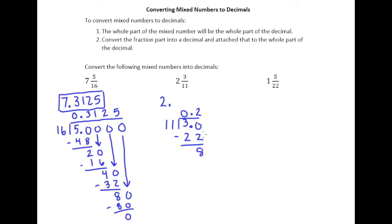2 times 11 is 22. Get a remainder of 8. Take our 0, drop it down. 11 goes into 80 seven times. 7 times 11 is 77. Get a remainder of 3. Add a 0, drop it down. 11 goes into 30 twice. 2 times 11 is 22. Some of you may see a pattern at this point. Drop down to 0. 11 goes into 87 times.